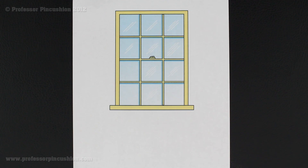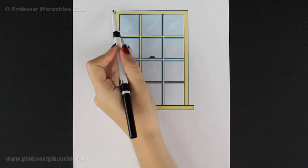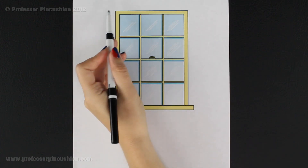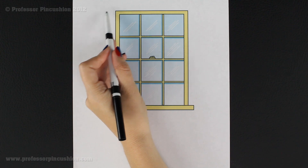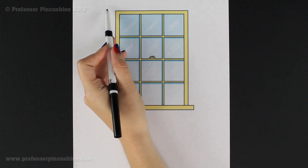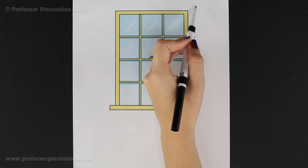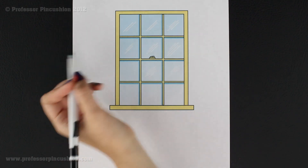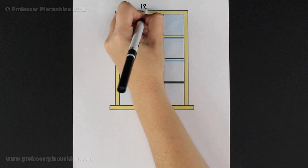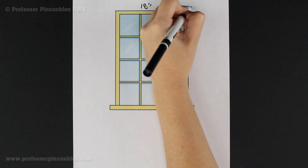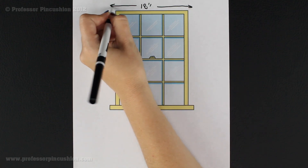Making your own curtains is not as hard as you think. The most important thing is figuring out how much fabric you're going to need, and to do that we need to get our window measurement. The first thing we're going to measure is the width of the window — from one end to the next. If you have a curtain rod that extends past the window frame, measure from one end of the curtain rod to the other. For my example I'm going to pretend it's 18 inches from one end to the other.